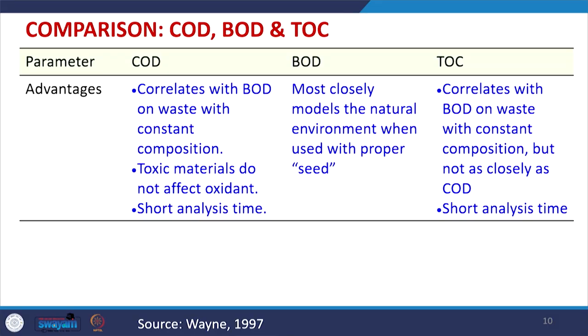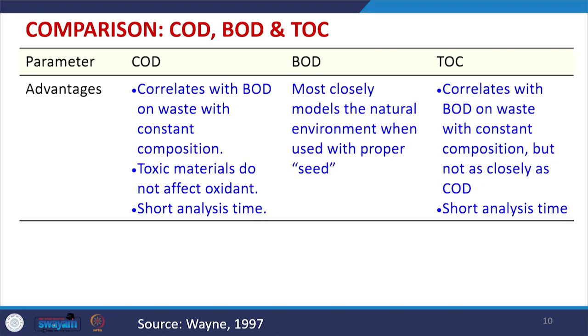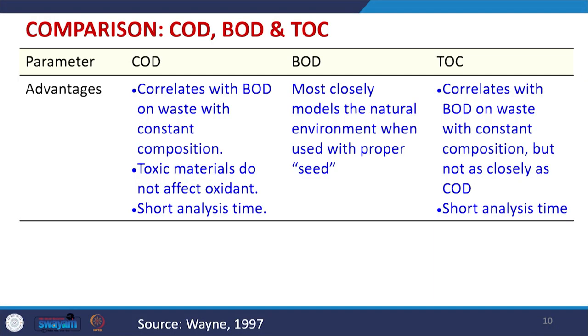Advantages of COD: it correlates with BOD for wastes with constant composition, so once COD is known BOD can be estimated; toxic materials do not affect the oxidant since a strong oxidizing agent is used; and analysis time is short. BOD closely models the natural environment when proper seed water is used, and actually measures the oxygen demand that will occur in the natural environment. TOC correlates with BOD for constant composition wastes and analysis time is very short.